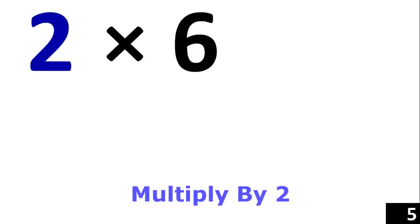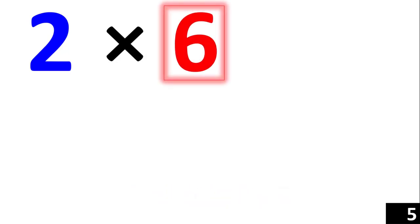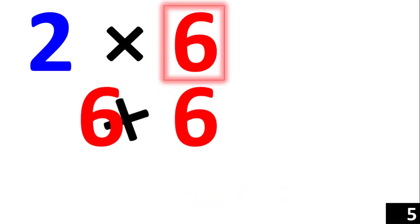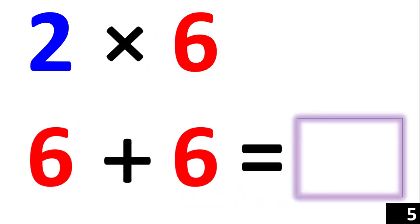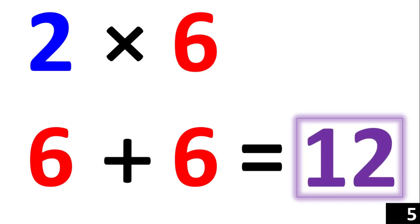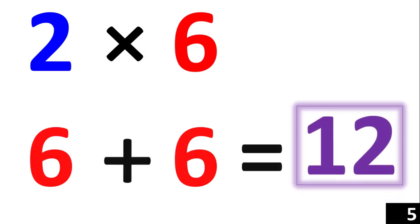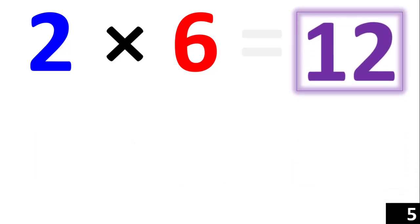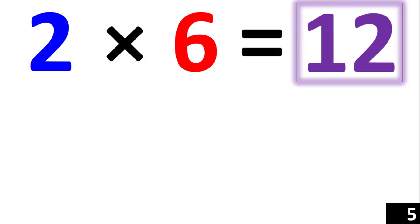For 2 times 6, we just use the rule of 2. 2 times 6 is the same thing as 6 plus 6, which equals 12. Therefore, 2 times 6 is equal to 12.